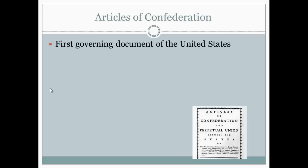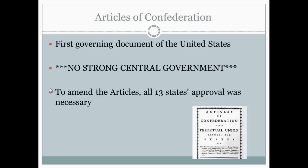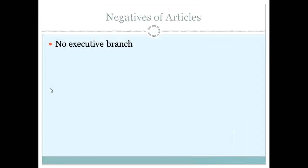The first governing document of the United States was not the Constitution — it was the Articles of Confederation. The big thing you need to know is that it lacked a strong central government, done on purpose, with most power resting with the states. A huge problem was that in order to amend the Articles, all 13 states had to approve it. You need to know the negatives and positives of the Articles, and there are a lot more negatives than positives.